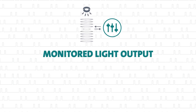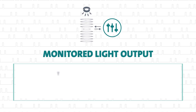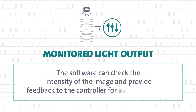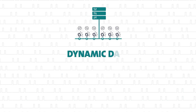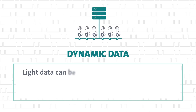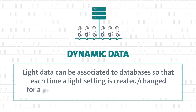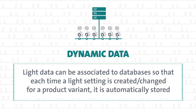As we mentioned in the previous part of this series, the software can check the intensity of the image and provide feedback to the controller for any adjustments to the lighting. Light data can be associated to databases, so that each time a light setting is made for a product variant, it is stored in the associated database. The parameters are automatically retrieved when the variant is detected in the process.